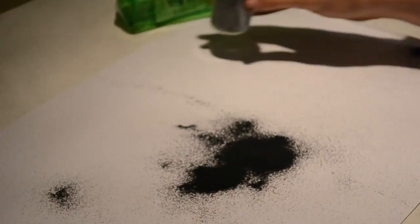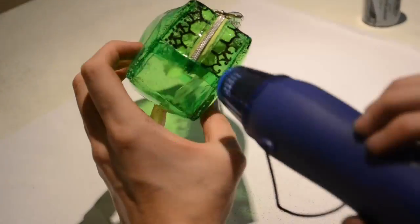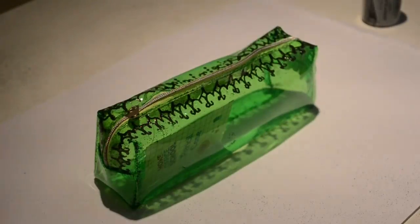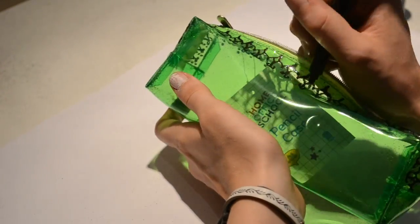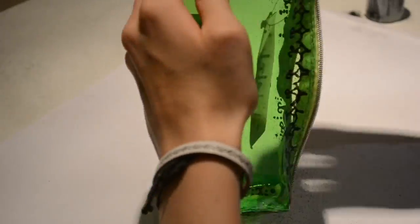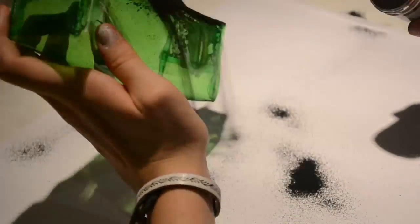Then I'm simply taking my embossing gun once again and heating up the powder so it melts. You can actually just about see the change. Make sure however you do not concentrate the gun in a specific area for too long, especially when working on this material, as it will start to slightly melt and distort the shape of the plastic.